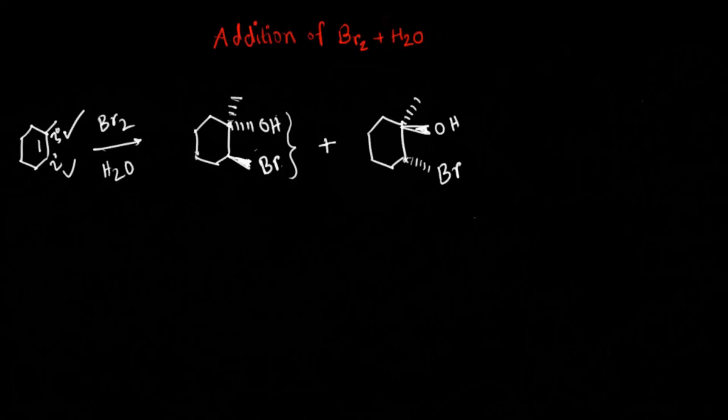Hey guys, I hope you're doing well. Today in this video I'm going to show you the addition of bromine in presence of water reacting across the double bond. Here we have our alkene, and it reacts with bromine in presence of water to form two products that are enantiomers of each other. You can clearly see that we're adding two different groups: the hydroxyl group comes from the water molecule and the bromine group comes from the bromine molecule.